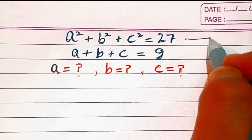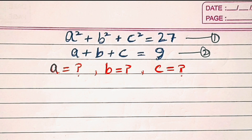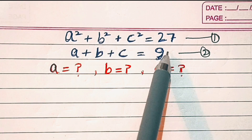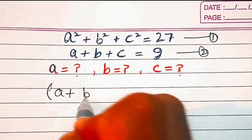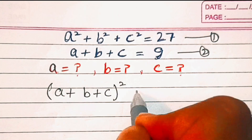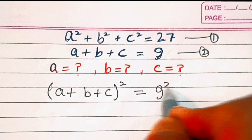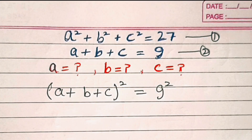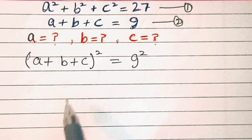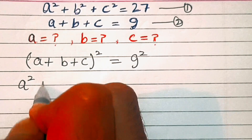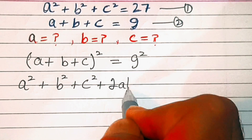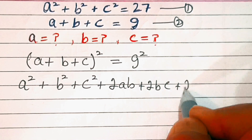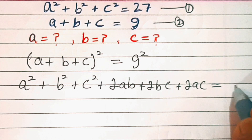First of all, let's make this equation number one and equation number two. To keep it simple, I will directly square equation 2 on both sides. So we'll have (a + b + c)² = 9². From the left hand side, this is an algebraic identity equal to a² + b² + c² + 2ab + 2bc + 2ac, which equals 9² = 81.